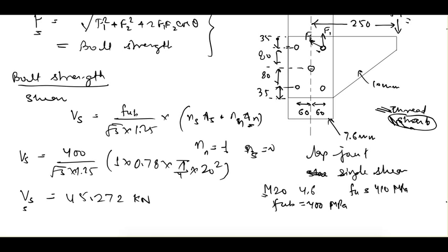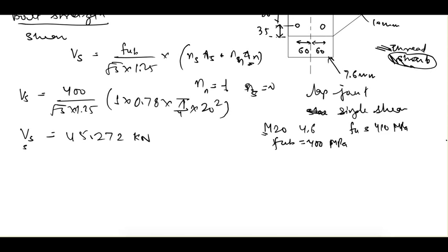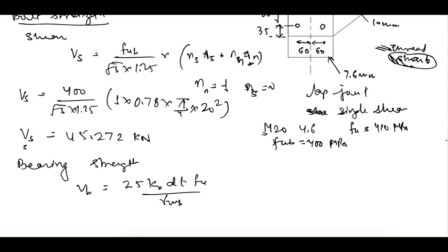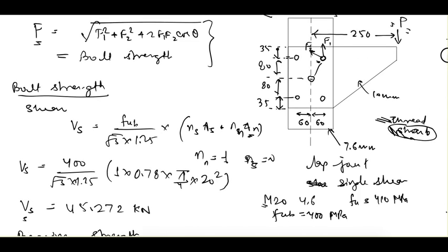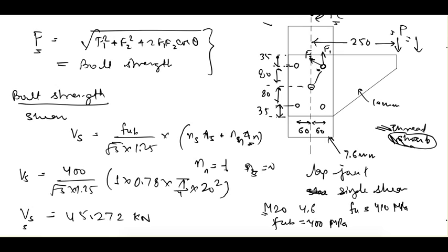Shear strength does not depend on the bolt's position or distance, so we've obtained the shear strength. Now let's find the bearing strength. The formula is 2.5·KB·D·T·FU / γ_MB. We first need KB, which is the minimum of: E / (3·D₀), P / (3·D₀) − 0.25, FUB/FU, and 1. Load P is applied such that E = 35 mm.